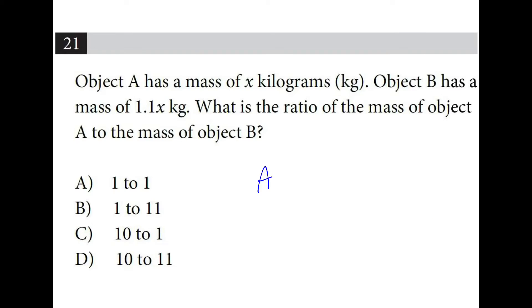So object A has a mass of x and object B has a mass of 1.1x. So which one's bigger? Object B is 10% bigger. If I wanted to get rid of the decimal, I could multiply both by 10. And this would be 10x, and this is going to be 11x. So A to B is 10 to 11.